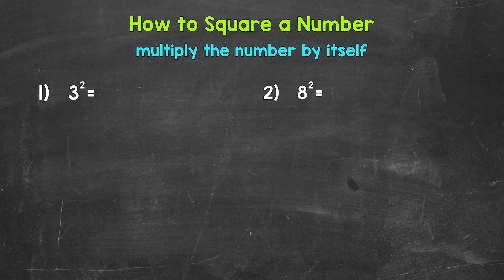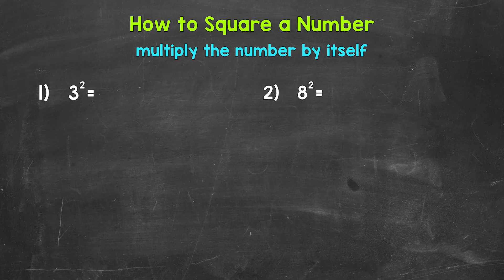Simply put, when we square a number, we multiply a number by itself. When we see an exponent of 2, that means we are squaring a number.